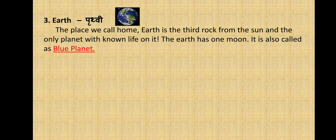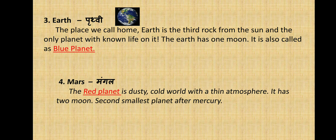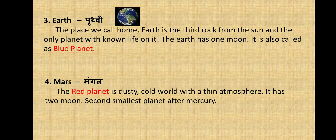Next we have Mars, also known as Mangal — the red planet. Mars is a dusty, cold world with a thin atmosphere. It has two moons and is the second smallest planet after Mercury. You can see in the picture that it is fully red, which is why this planet is called the red planet.